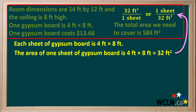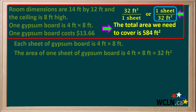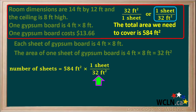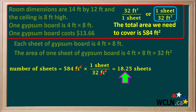Using this we can create two conversion factors: 32 square feet per one sheet, or one sheet per 32 square feet. We take 584 square feet and multiply by the conversion factor one sheet per 32 square feet. The unit square feet cancels, leaving us with the unit sheets. 584 divided by 32 comes out to 18.25 sheets. Because there is usually some waste, it's safest to buy 20 sheets. If a full sheet is left over after the job, we can return it for a refund.